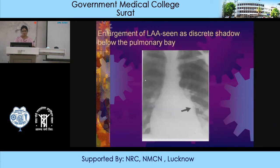This image shows uplifting of the left main bronchus leading to an increase in the angle of tracheal bifurcation. You can see there is a discrete shadow — ideally it should be flattened, however there is a convexity because of enlargement of the left atrial appendage.